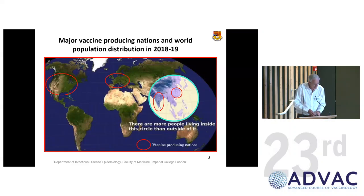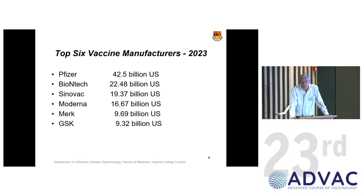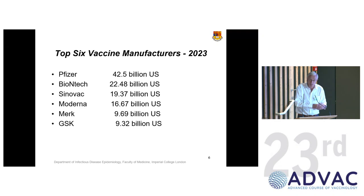Taking the top six vaccine manufacturers as of April 2023, we've got three new players — very significantly BioNTech, Xenobac, and Moderna. The others — Merck and GSK — who were at the top of the list are now down the bottom because they didn't produce a COVID vaccine. COVID has had a huge influence on the profitability of these vaccine manufacturing companies, enormous in one particular example.